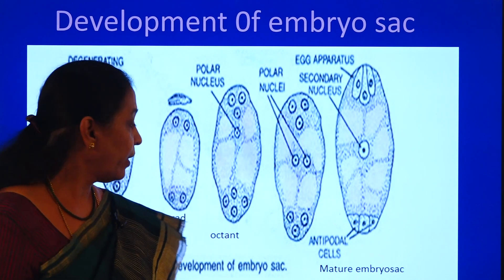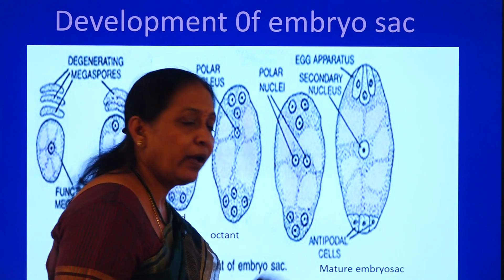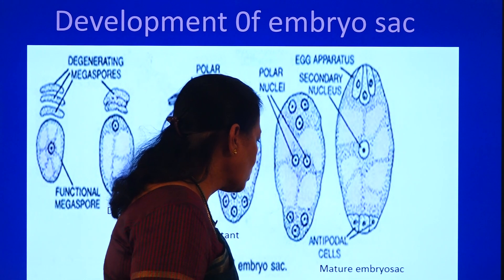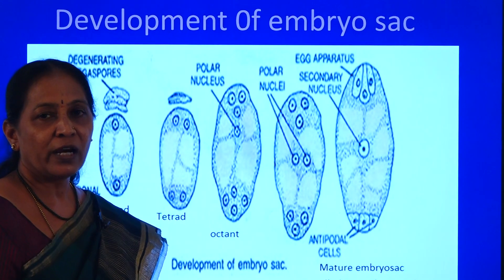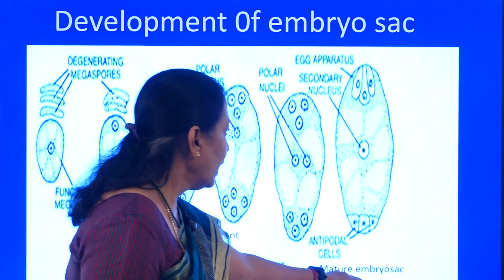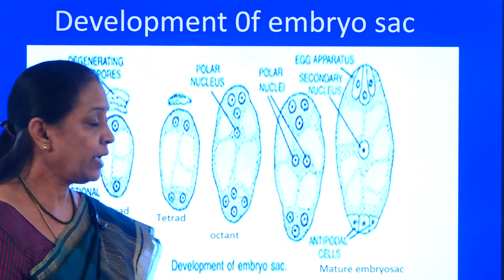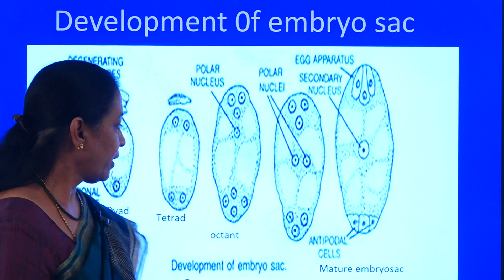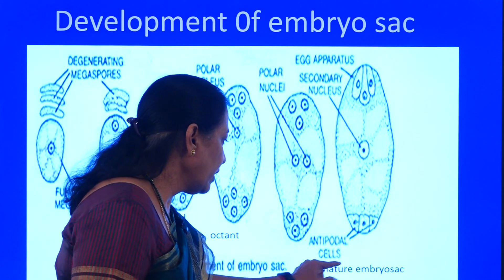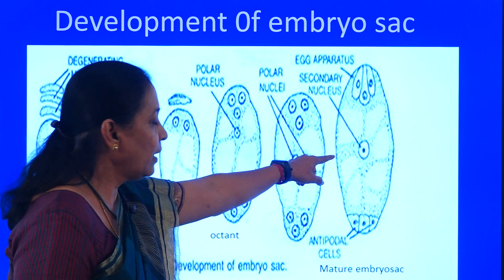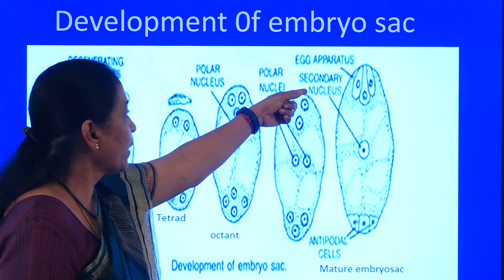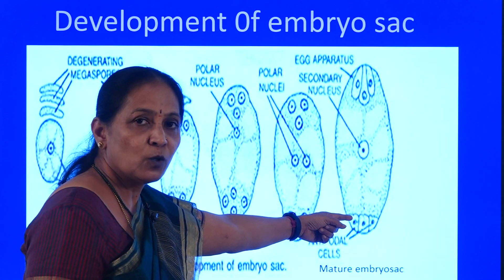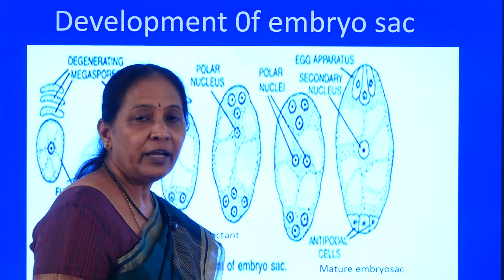That embryo sac is referred to as a mature embryo sac. A mature embryo sac is always seven-celled and eight-nucleate. That is the mature embryo sac in an angiosperm — with a central secondary nucleus, the three micropylar nuclei forming the egg apparatus, and the three chalazal nuclei constituting the antipodals.